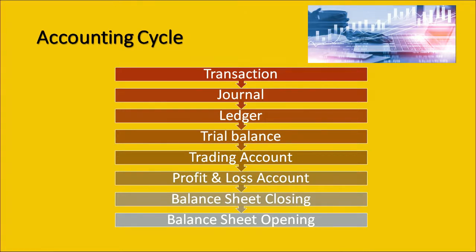The trial balance reflects the balance of all accounts listed on a particular date. Then we have the trading account, which is specific to organizations involved only in selling activities and not in manufacturing. We have the profit and loss account, which lists the income and the expenses. The balance sheet reflects the status of the organization on a particular date and tells about the health of the company. From the balance sheet closing you again move to the balance sheet opening.